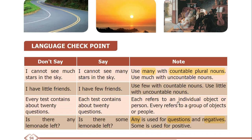Each refers to an individual object or person. Every refers to a group of objects or people. For example: every test contains about 20 questions — each test contains about 20 questions.